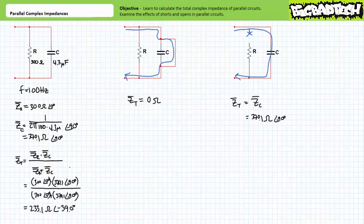That's about it for our discussion of parallel complex impedances. In conclusion, this lecture examined parallel complex impedances. We learned to calculate the total impedance of parallel complex impedances using both the quick and dirty method for two impedances only and the more involved method for two or more impedances. We learned that one must always account for direction when calculating parallel impedance. Additionally, we examined the effects of shorts and opens in parallel relationships. Remember to review these concepts as often as needed. Thank you very much for your attention and interest, and we'll see you again during the next lecture of our series.